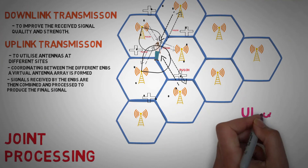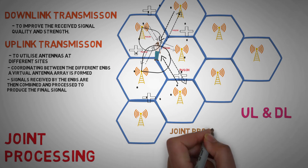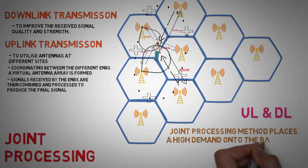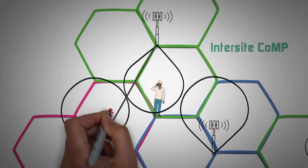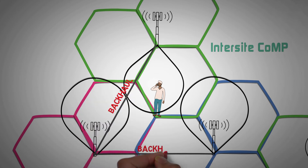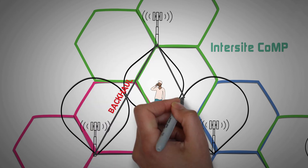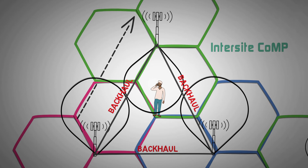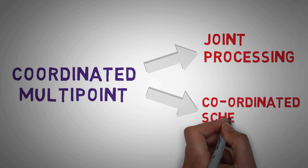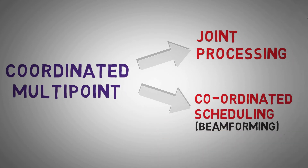In both uplink and downlink, the Joint Processing method places a high demand on the backhaul network. A lot of data needs to be exchanged between the coordinated eNodeBs. Depending upon the number of eNodeBs involved, this data may be double or triple.